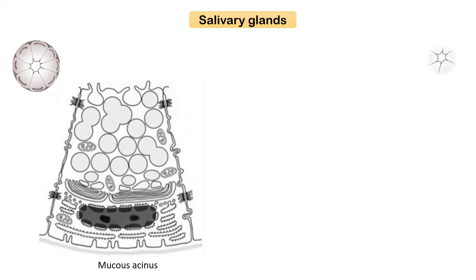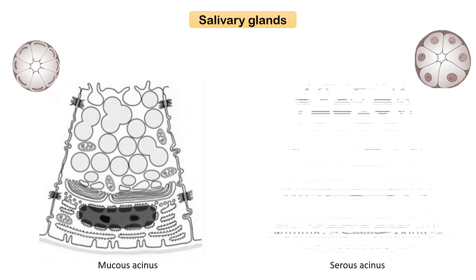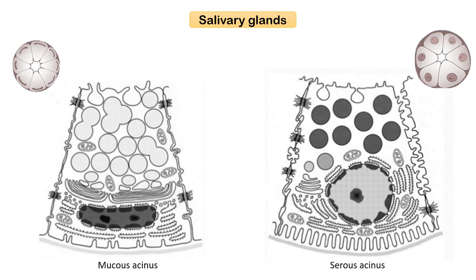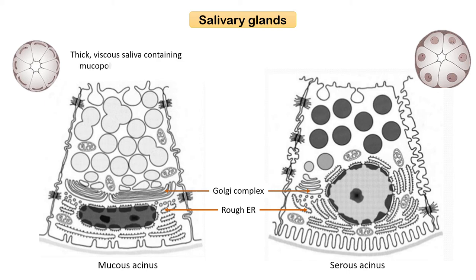The serous acinar cells are apically filled with proteinaceous secretory zymogen granules which have high amylase activity. Serous acinar cells are triangular-shaped with round nuclei, responsible for secreting a more aqueous secretion. The mucus acinar cells produce thick viscous saliva containing mucopolysaccharides and mucin.